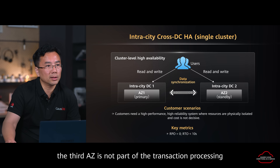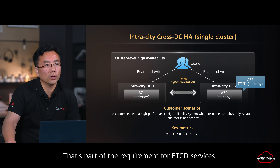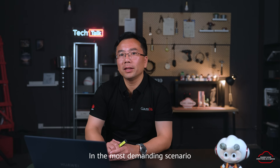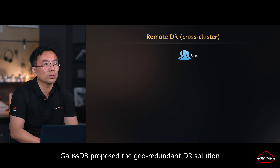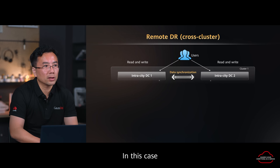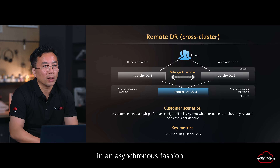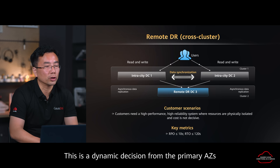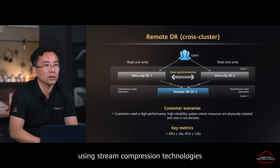However, in this case, the third AZ is not part of the transaction processing — it works as a quorum AZ holding the ETCD services, which is a requirement for ETCD service using three AZs. In the most demanding scenario, like the core banking system, GaussDB proposes the geo-redundant DR solution based on the preceding two HA deployment solutions. In this case, a remote AZ is deployed in a separate region, taking logs from one of the primary AZs in an asynchronous fashion. This is a dynamic decision from the primary AZs, incurring less interruption to the primary. The replication service uses stream compression technologies to reduce bandwidth usage and latency.